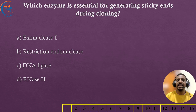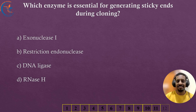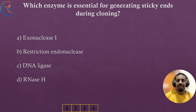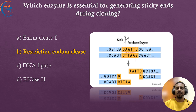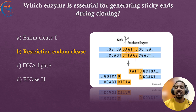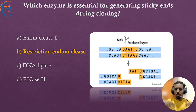Which enzyme is essential for generating sticky ends during cloning? The correct answer is restriction endonuclease. Restriction endonucleases cut specific DNA sequences, producing sticky ends that facilitate DNA ligation in the cloning process.